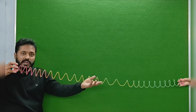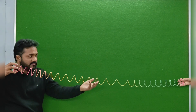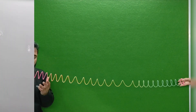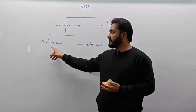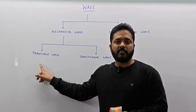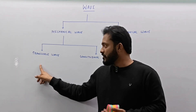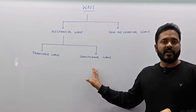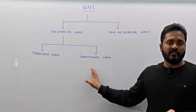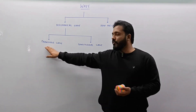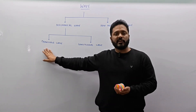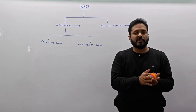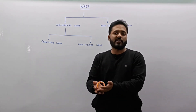We can see this one last time. In the transverse wave case, the wave is propagating perpendicular to the direction of disturbance, consisting of alternating crests and troughs. In the longitudinal wave case, the wave is propagating in the direction of disturbance, consisting of alternating compressions and rarefactions.